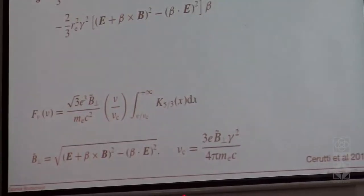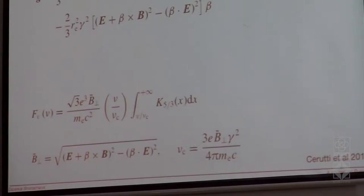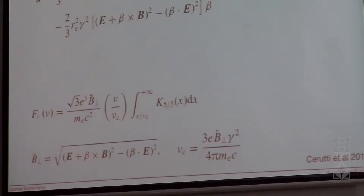With this formulation you have a model for the radiation. Note that this is the only radiation included in the simulation right now — there is no inverse Compton scattering of photons; that's not included. The beta cross E plus beta cross B gives the circular motion part, and beta dot E is a component related to curvature radiation.